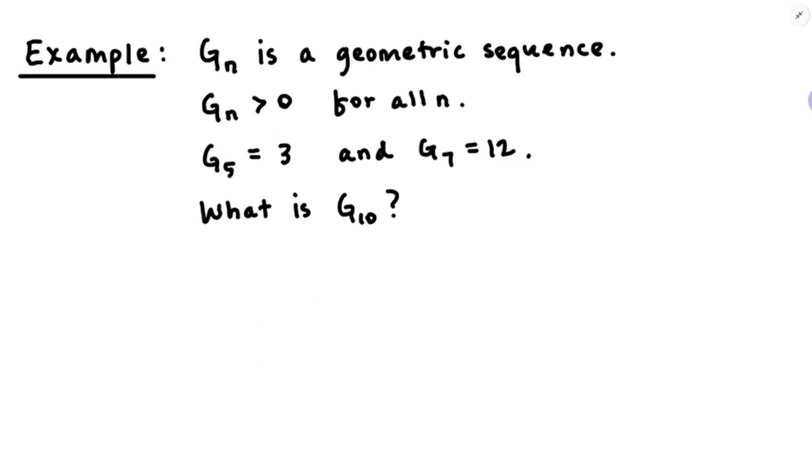Here's a very similar question, but with a geometric sequence. Suppose g_n is a geometric sequence with all positive terms. If g_5 is equal to 3 and g_7 is equal to 12, if the 5th term is 3 and the 7th term is 12, what's the value of the 10th term? And you know, I think this one you could probably just hack through it and just figure out what the ratio is and then just go up, up, up. And that might actually be the thing to do.